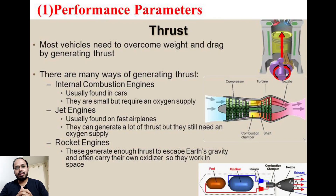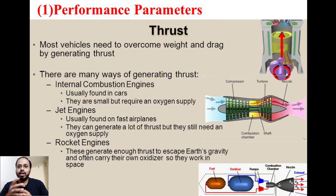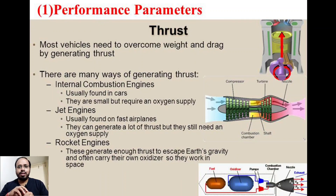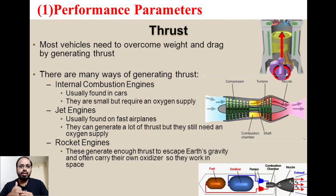The first performance parameter is thrust. Thrust is a very important performance parameter of both aircraft engines and rocket engines. Most vehicles need to overcome weight and drag by generating thrust, and there are many ways of generating thrust — in internal combustion engines, jet engines, and rocket engines. Internal combustion engines are usually found in automobile vehicles like cars and buses; they are generally small in size but require an oxygen supply.